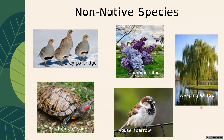Here are some examples of non-native species: the grey partridge, the common lilac, the weeping willow, the house sparrow, and the red-eared slider turtle have all been introduced to Ontario. These all did not originally develop in this area.